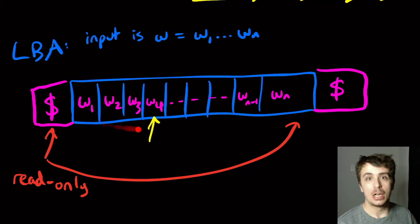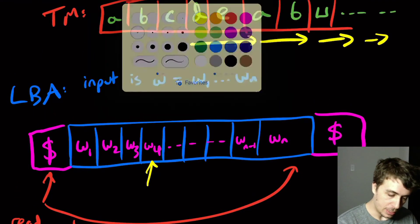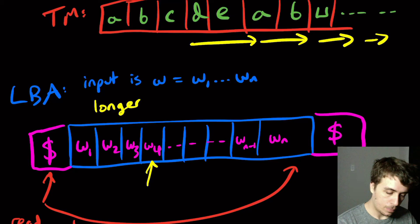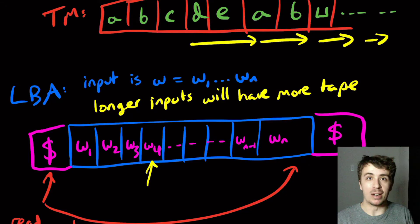And one thing to note here is that longer inputs will have more tape, because we have to store the input somewhere. So we, in this in some sense, we are only storing the input and nothing else. There's no other information being stored here.